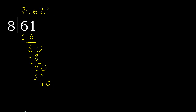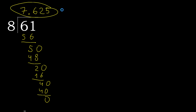8 multiplied by 5 is 40, which is not greater. Subtract — 0. Therefore finish it. 61 divided by 8 is here.